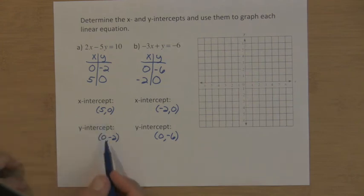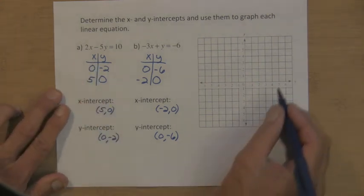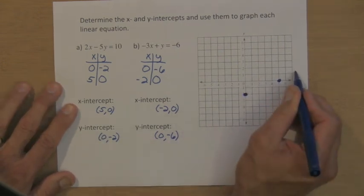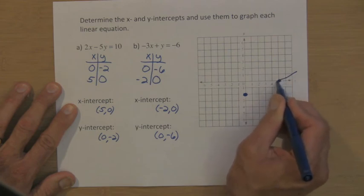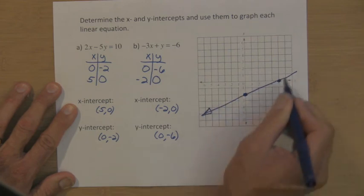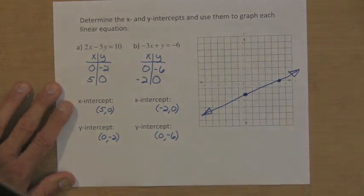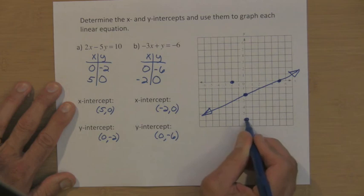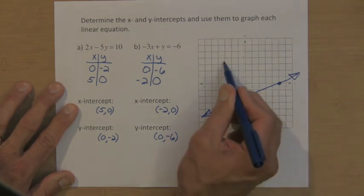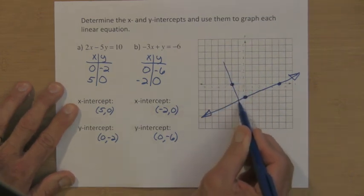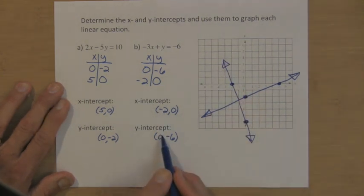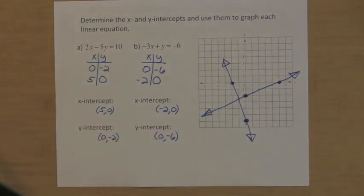Graph each line. The intercepts for the first equation are five, zero and zero, negative two — connect those, and this is the line for the first equation. For the second one, two, zero and zero, negative six — connect these two, and this is the line for the second equation. The intercepts are labeled, the tables are done, the graphs look good. That is the end of skill number eleven.